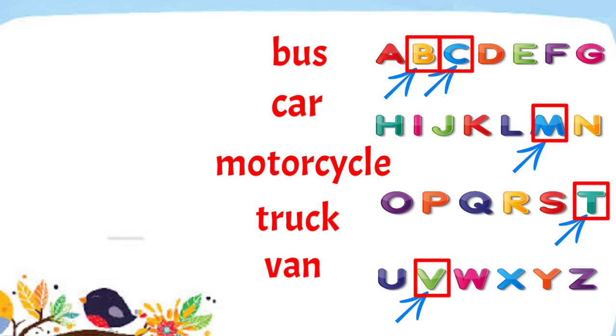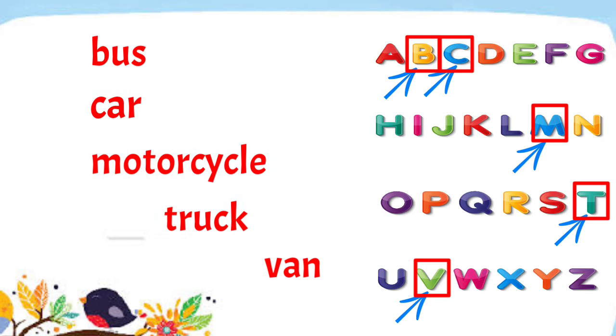So the alphabetical arrangement of this group of words is bus, car, motorcycle, truck, and van.